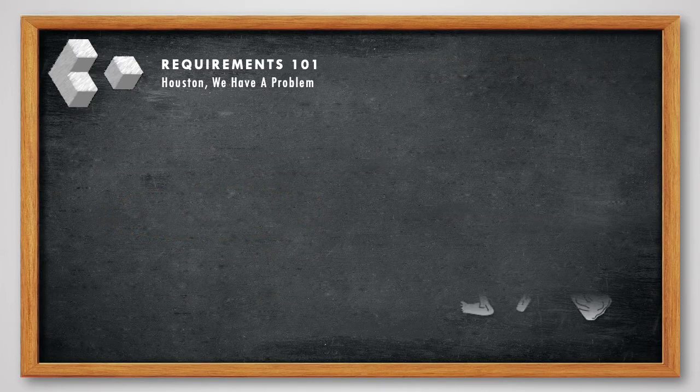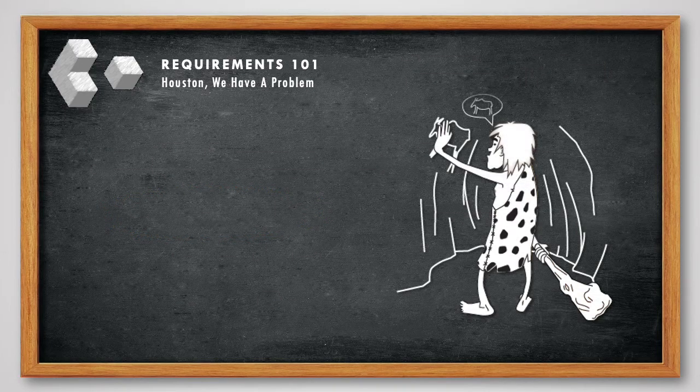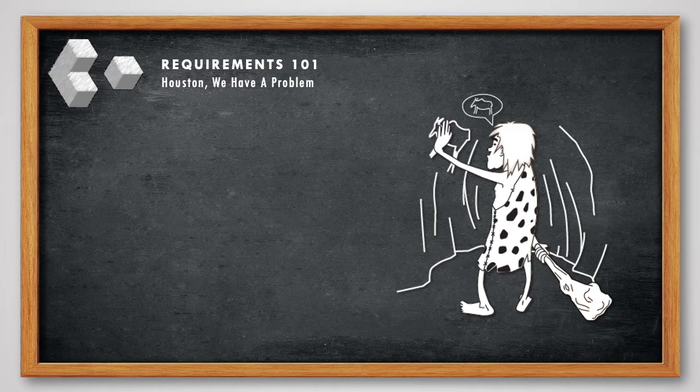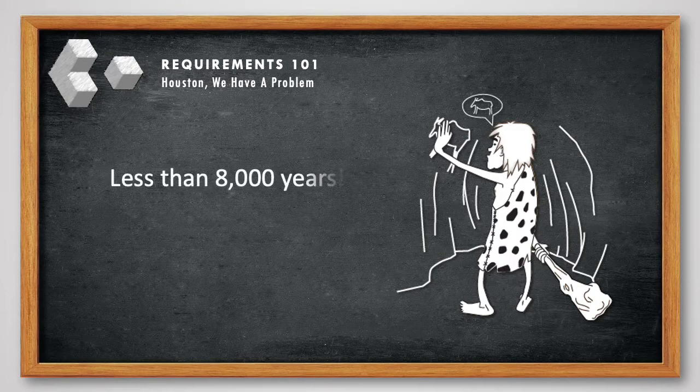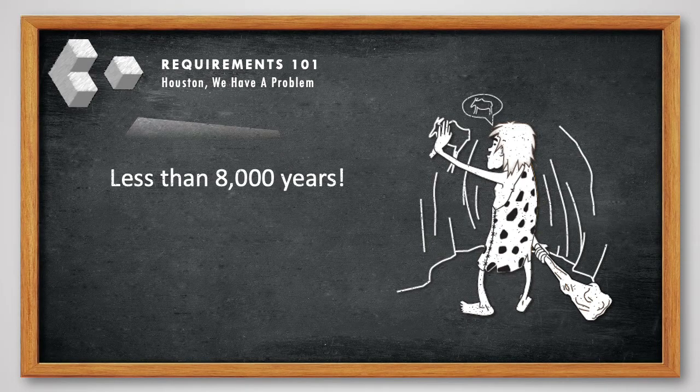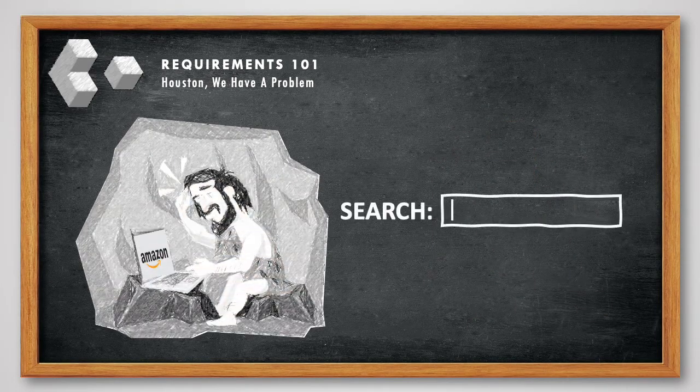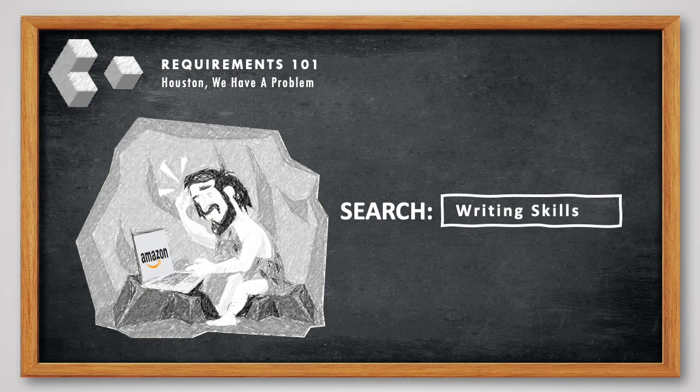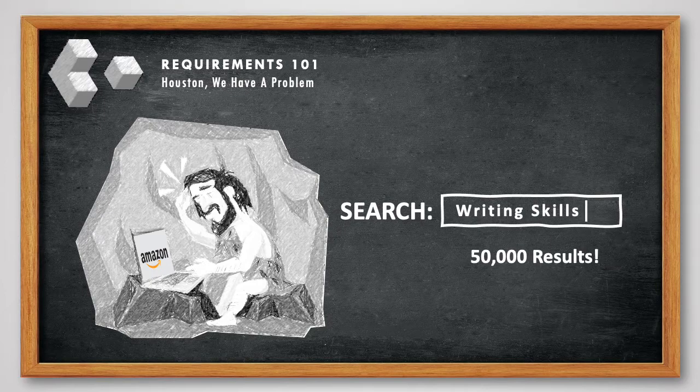Now, if communicating with words wasn't hard enough, most of our Requirements that we deal with are written-down words, something we've only been doing for less than 8,000 years or so. And so it's not surprising that when you search for writing skills on Amazon, you get over 50,000 search results in the book section.